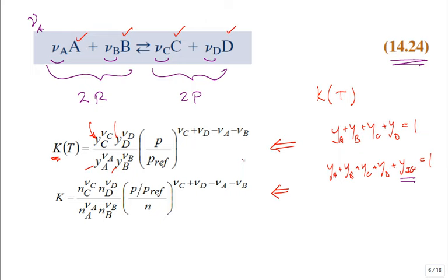When we have a mole fraction of some non-participating inert gas, that changes the equation a little bit. That would be like the nitrogen in the air. Sometimes nitrogen is viewed as participating and dissociating, sometimes it's not. If you had argon in the air, it doesn't participate.